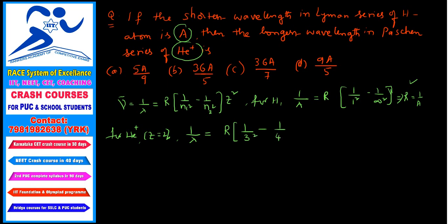So 3 square minus 1 by 4 square into Z square. What is Z square? Z square is 2 square. That equals to R value, you know that is 1 by A, into this is 1 by 9 minus 1 by 16 into 4.